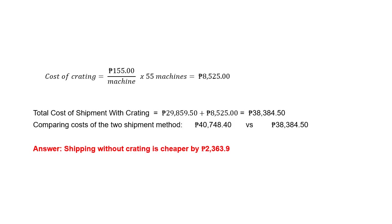The total cost of shipment with crating is 29,859.50 pesos plus the cost of crating, 8,525 pesos, which equals 38,384.50 pesos. Comparing both methods, shipping without crating costs 40,748.40 pesos and shipping with crating costs 38,384.50 pesos. Therefore, shipping without crating is cheaper by 2,363.90 pesos.